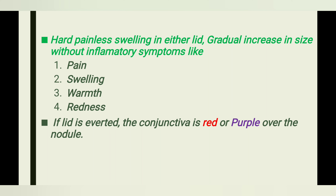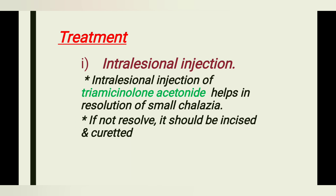Chalazion presents as a hard, painless swelling in either lid with gradual increase in size, without inflammatory symptoms like pain, swelling, warmth, and redness. If the lid is everted, the conjunctiva will be red or purple over the nodule.